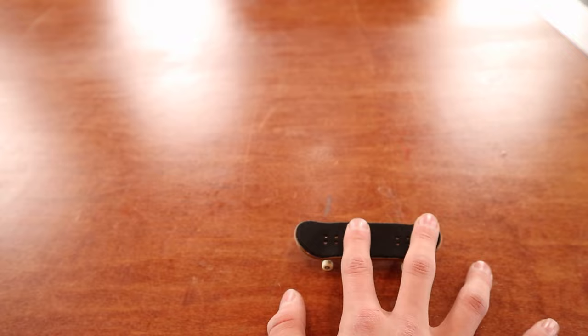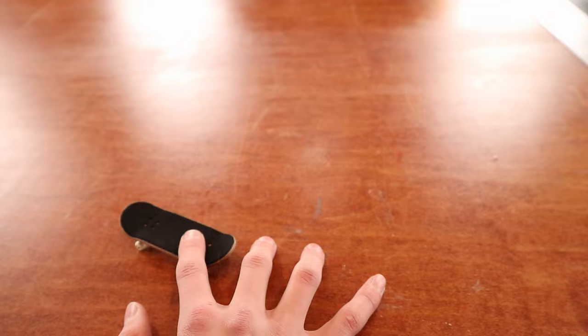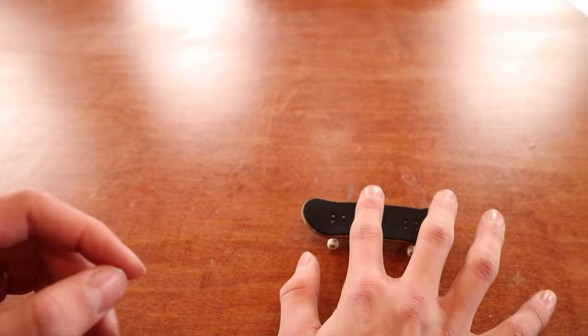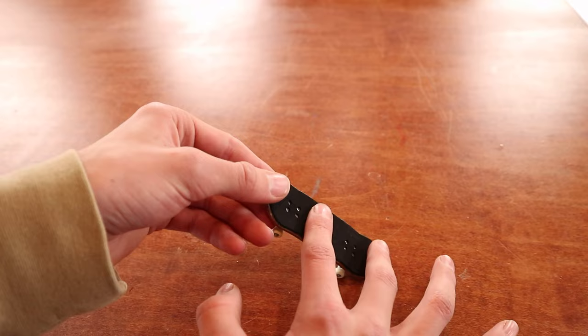These are the basic steps: pop the board up like this and you don't even need to catch the board. Work on learning how to flip the board. Once you have a basic flip down, work on aligning your fingers back on the board. When I do a kickflip, I pop the board up, take my fingers off, the board spins, and I put my fingers back on the board.